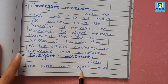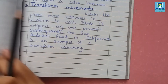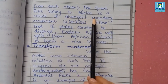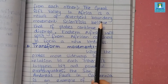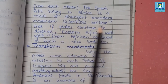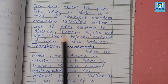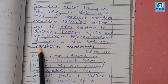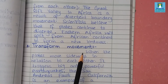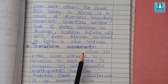The Great Rift Valley in Africa is the result of a divergent boundary, as we have seen in the picture in our book. Scientists believe that if the plates continue to diverge, eastern Africa will split from the African continent to form a new landmass. So if the plates continue to move apart, one part will separate from its continent and cause the formation of a new landmass.